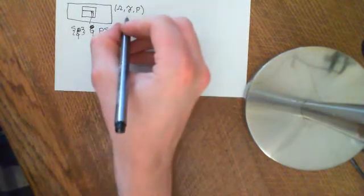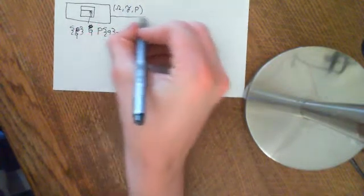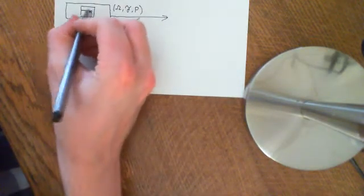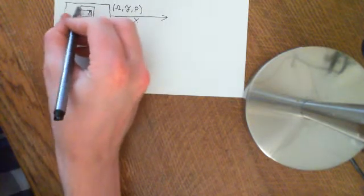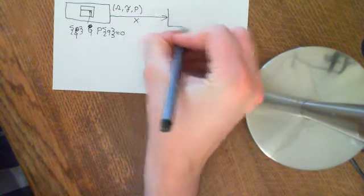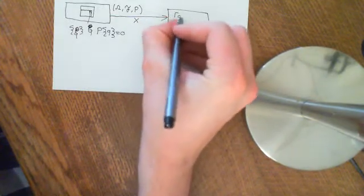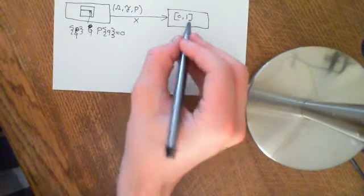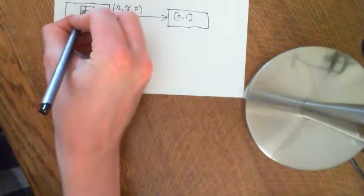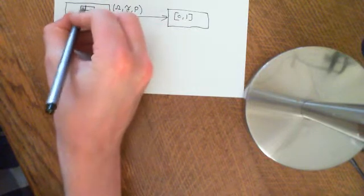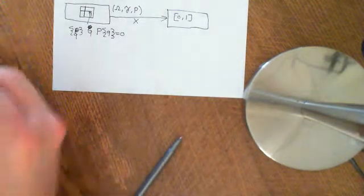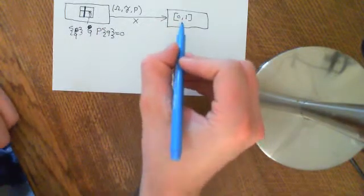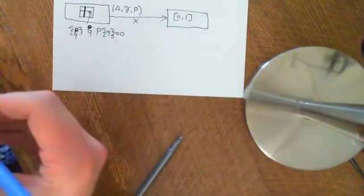What we're going to do is set up two random variables on this. Firstly, the random variable X, which is going to label each point in this square with its X coordinate. So this is going to take values in the interval zero to one. It's going to map all points with the same X coordinate onto the same value — so all the points on a vertical line, all these points here on this square, will be mapped onto the same point in the real numbers.